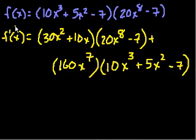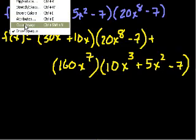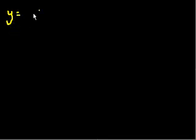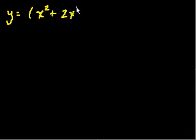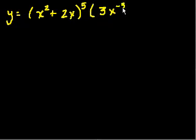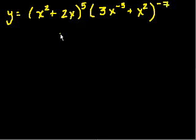I'm going to do one more example using both the product and the chain rule. I'm going to use a slightly different notation: instead of f of x and f prime of x, I'll say y. So y is equal to x squared plus 2x, all to the fifth, times 3x to the minus 3 plus x squared, all to the minus 7. And I want to find the rate at which y changes relative to x, so I want to find dy over dx. This is just like f prime of x — it's Leibniz notation.